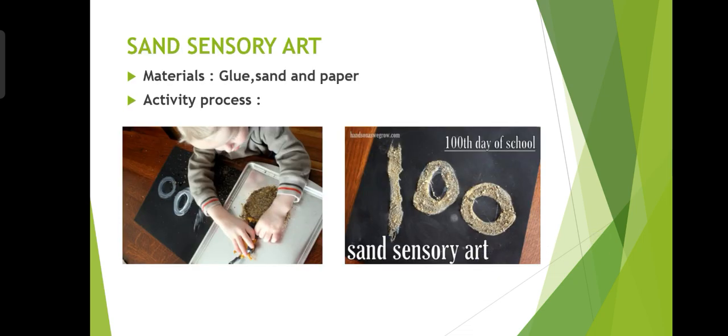Next is science sensory art. Materials required: glue, sand, and paper. Activity process: first, children draw a line or number on the paper or chart, then spray sand over the glue. The result is a textured picture or number as shown — this is known as science sensory art.